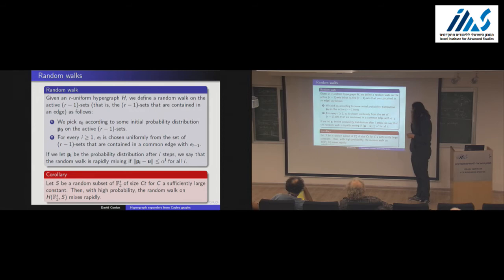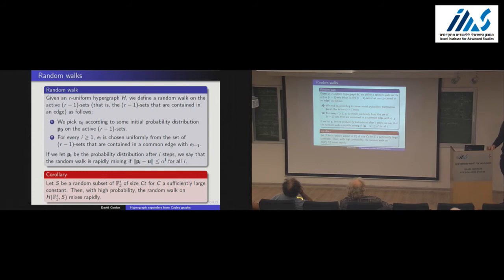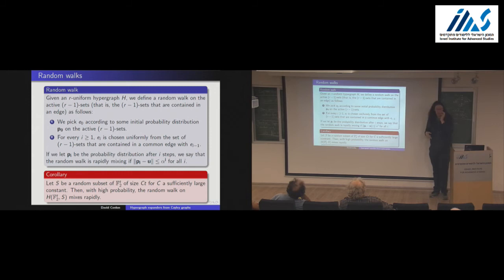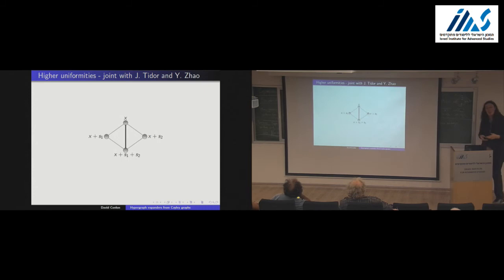In the context of Ramanujan complexes, there's been a lot of work recently on this random walk aspect — papers by Kaufman and Mass, Dinur and Kaufman, and more recently Kaufman and Oppenheim, with very nice things to say there. That's the three-uniform case, which satisfies other properties besides this expansion. Let me talk about what happens in higher uniformities. This is joint work with Jonathan Tidor and Yufei Zhao, both at MIT.